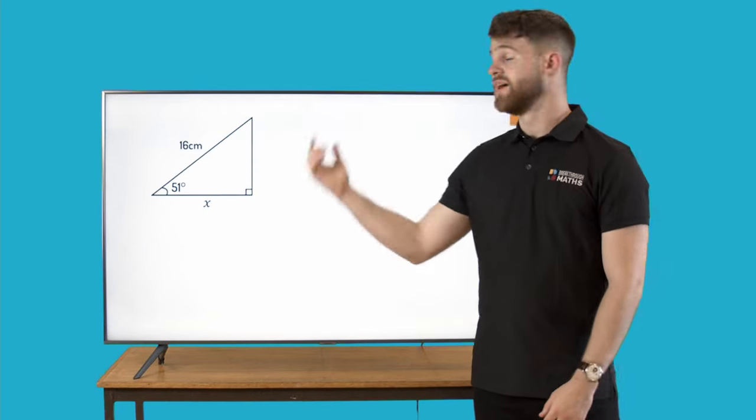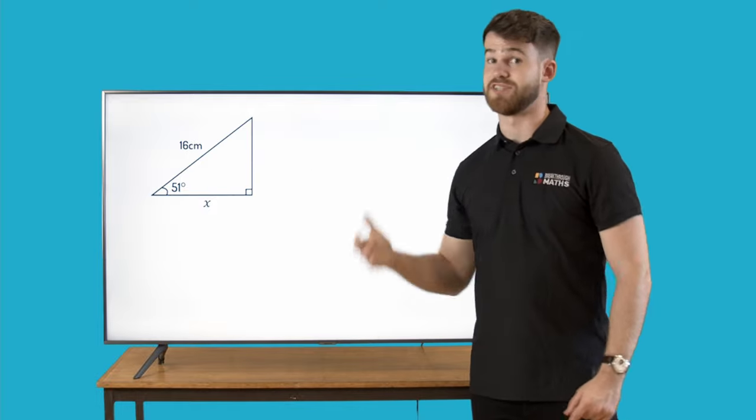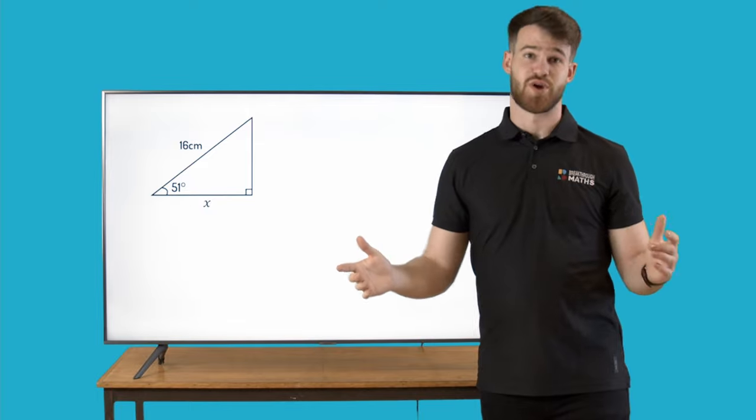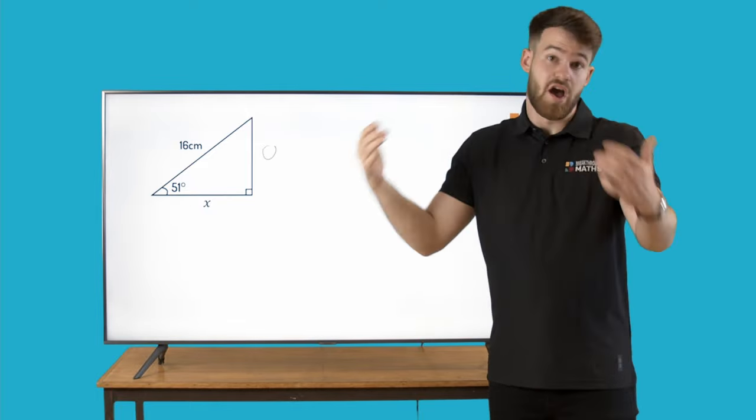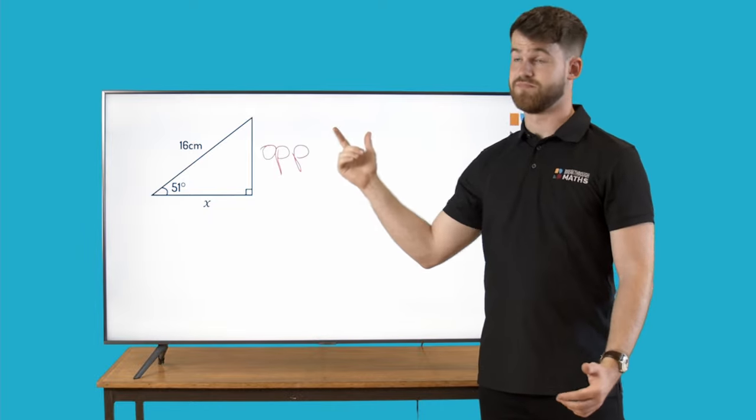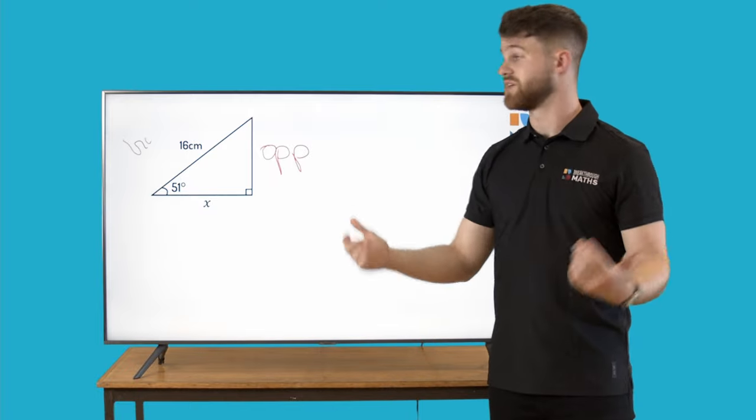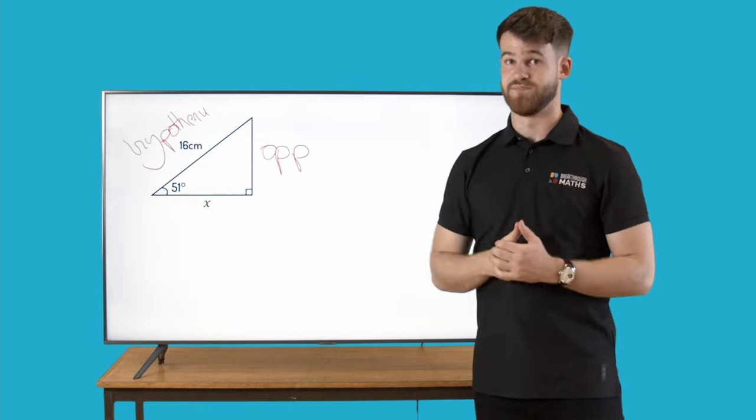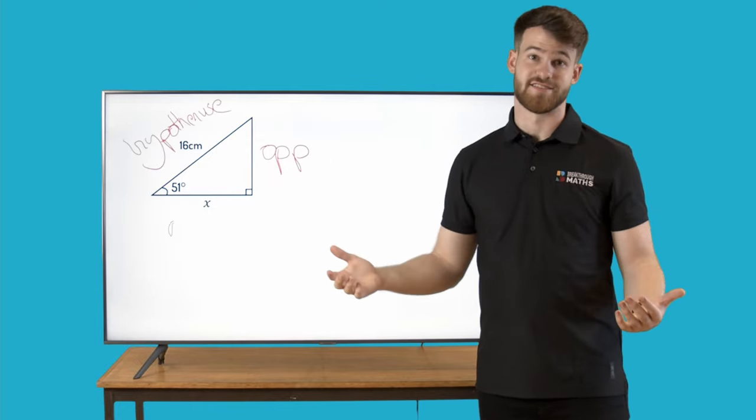Let's look at an example. In this example here we're trying to find the length of the side labelled x. First of all we need to label the sides of the triangle. This side here on the right is going to be called the opposite because that's the side opposite the angle. The 16 centimetres here is going to be the hypotenuse because that's the longest side and it's the side opposite the right angle. And then finally x is just going to be the adjacent, the leftover side.